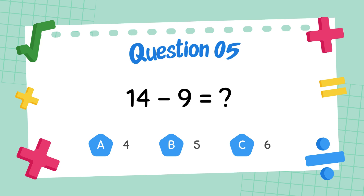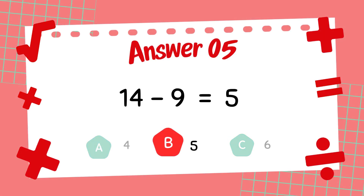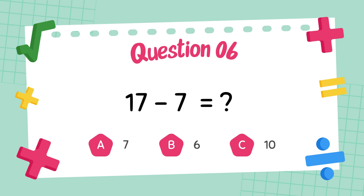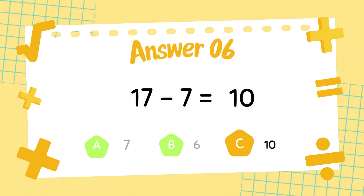What is 14 minus 9? The answer is 5. What is 17 minus 7? The answer is 10.